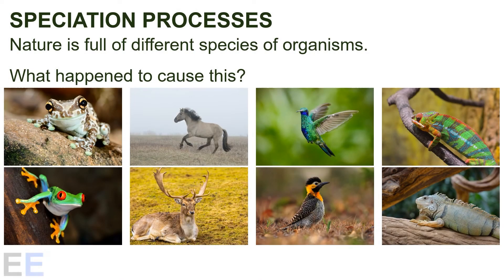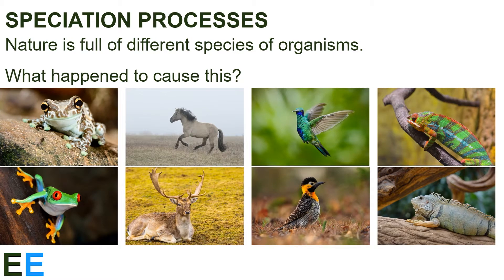Nature is full of different species of organisms. What happened to cause this? How did the world get so many different species? Let's take a look at speciation processes, the way in which new species arise.